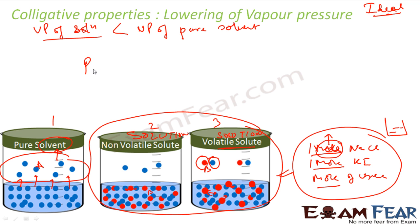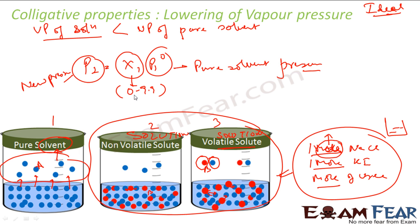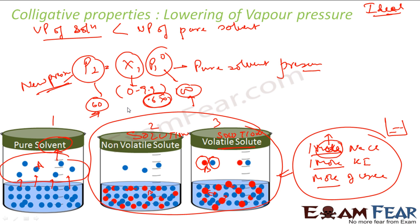So we have Raoult's law: p₁ = x₁ · p₁⁰, where p₁⁰ is the vapor pressure of the pure solvent and p₁ is the new (solution) pressure. Mathematically, x₁ is the mole fraction of the solvent, which is always between 0 and 1 (less than 1). So if you multiply p₁⁰ by something less than 1, the result must be lower. For example, if p₁⁰ = 100 and x₁ = 0.6, then p₁ = 60 — the new pressure is lower than the original, confirming that lowering of vapor pressure occurs.